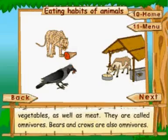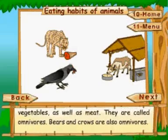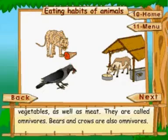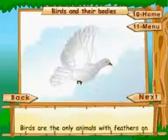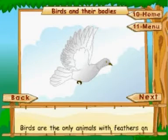Human beings eat fruits and vegetables as well as meat. They are called omnivores. Bears and crows are also omnivores.